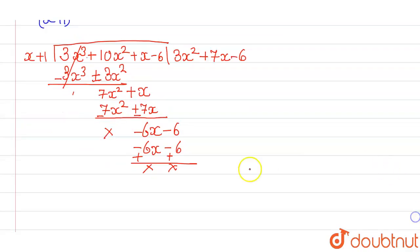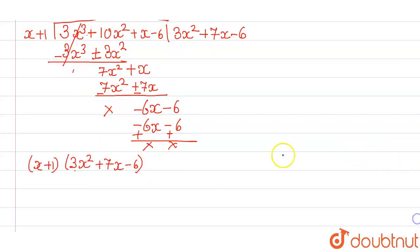So, what we have, we can say that this expression can be written as x plus 1, 3x square plus 7x minus 6. 6 into 3, 18, find the factors of 18. So, we can form 7. This can be written as 3x square plus 9x minus 2x minus 6.